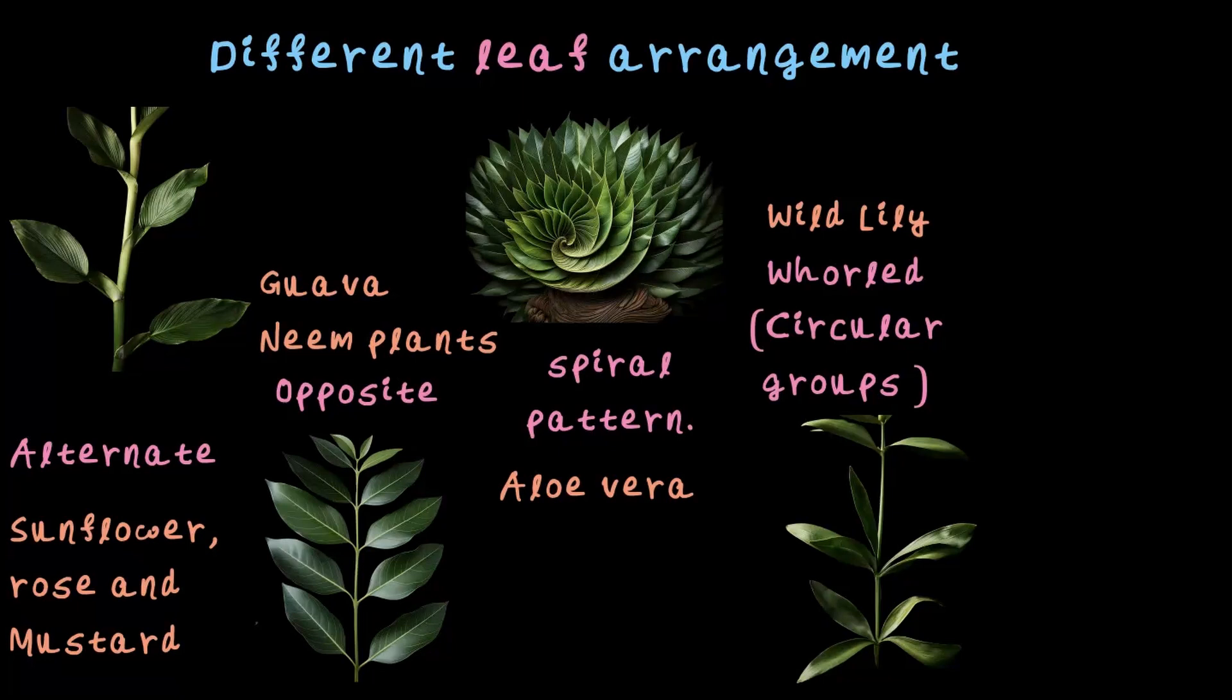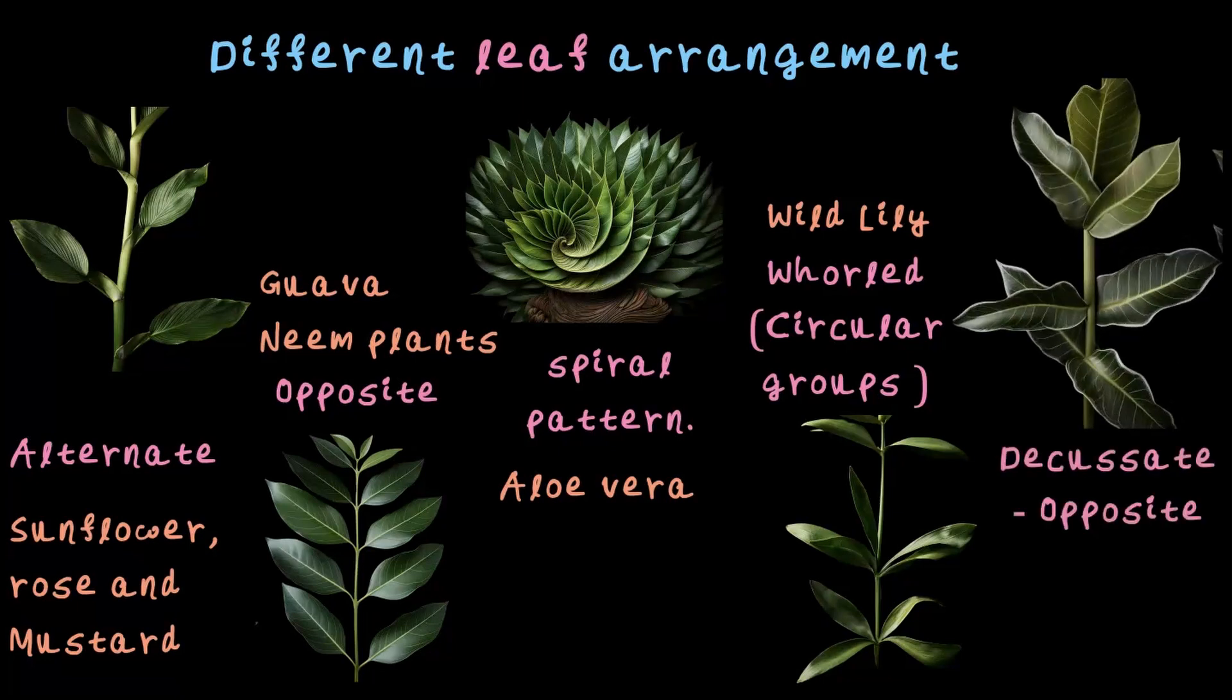And finally, the decussate opposite arrangement. Pretty interesting name and the arrangement is also quite interesting. It's similar to the opposite leaf arrangement, but the difference is that each pair of leaves is arranged at a 90 degree angle to the pair above it. Do you see that? You can see this in Tulsi plant.